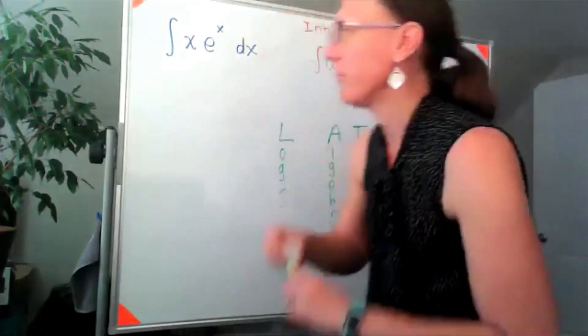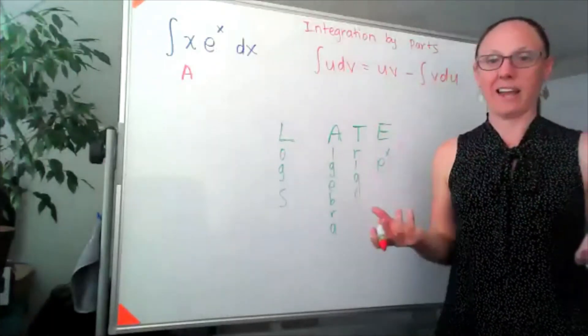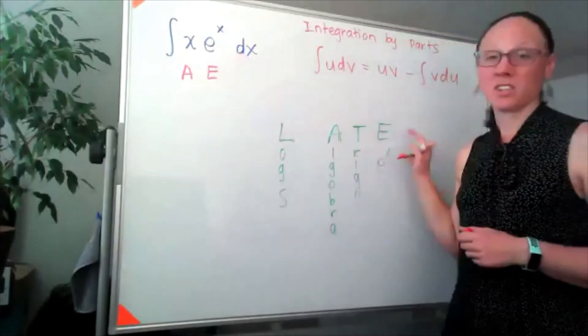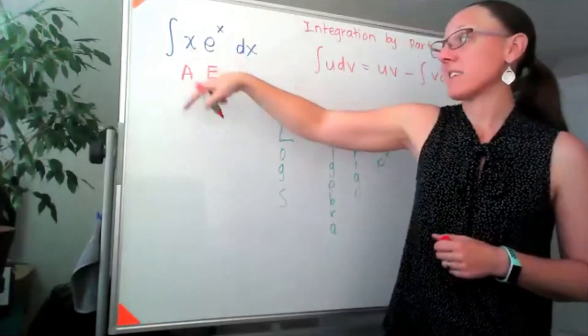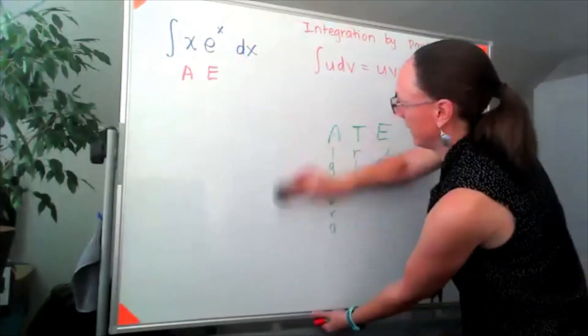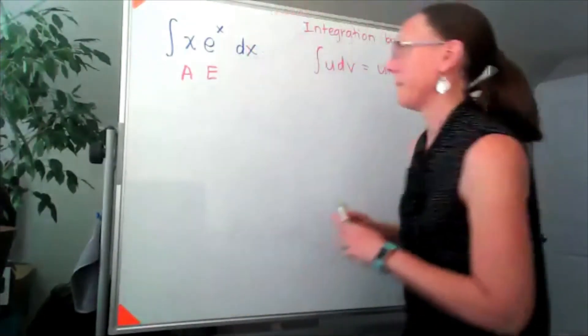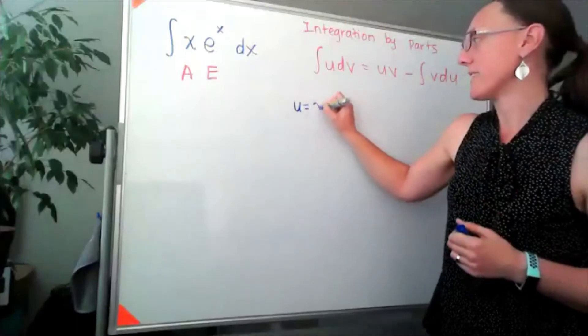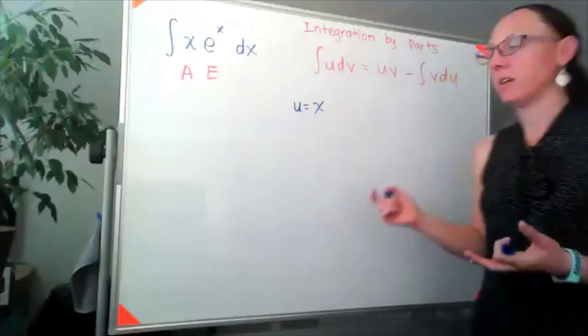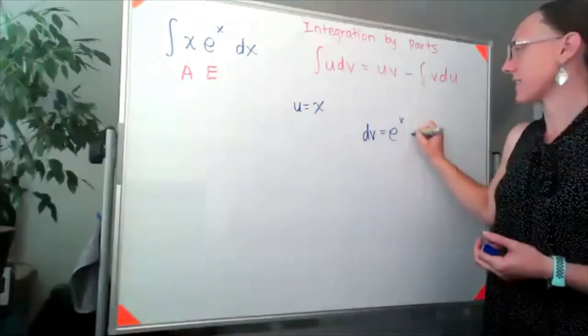Coming back over to here, I have algebra, which is anything that looks like x raised to powers. I'm calling that algebra. So I've got algebra and I've got exponentials. A comes first in the word LATE, which means x is what I'm going to set equal to u to do my integration by parts. I'm going to have u equal to x. And that means if I'm going to use the formula, everything else in that integral has to be dv. So du equals dx and dv equals e^x dx.